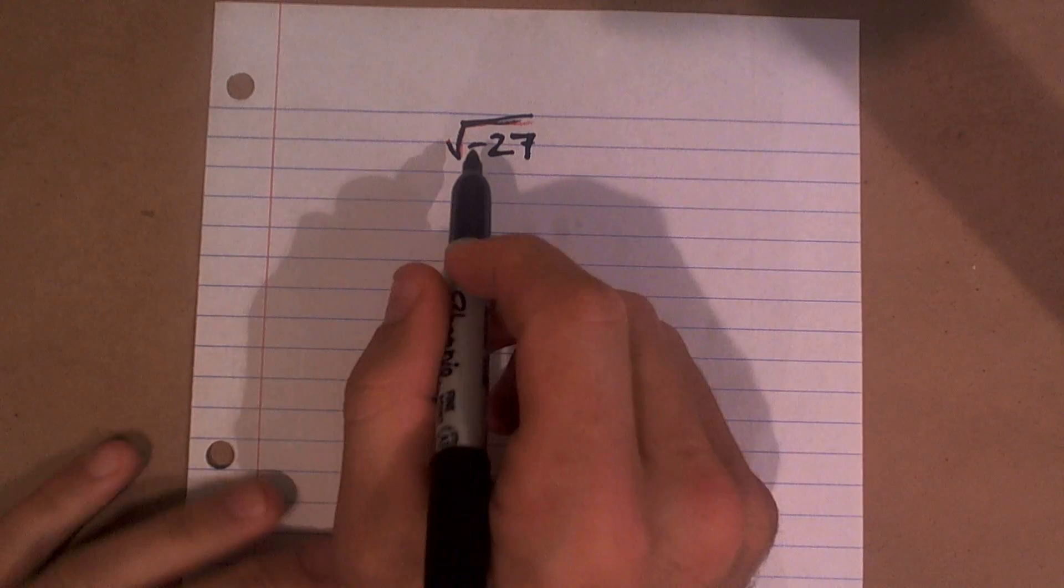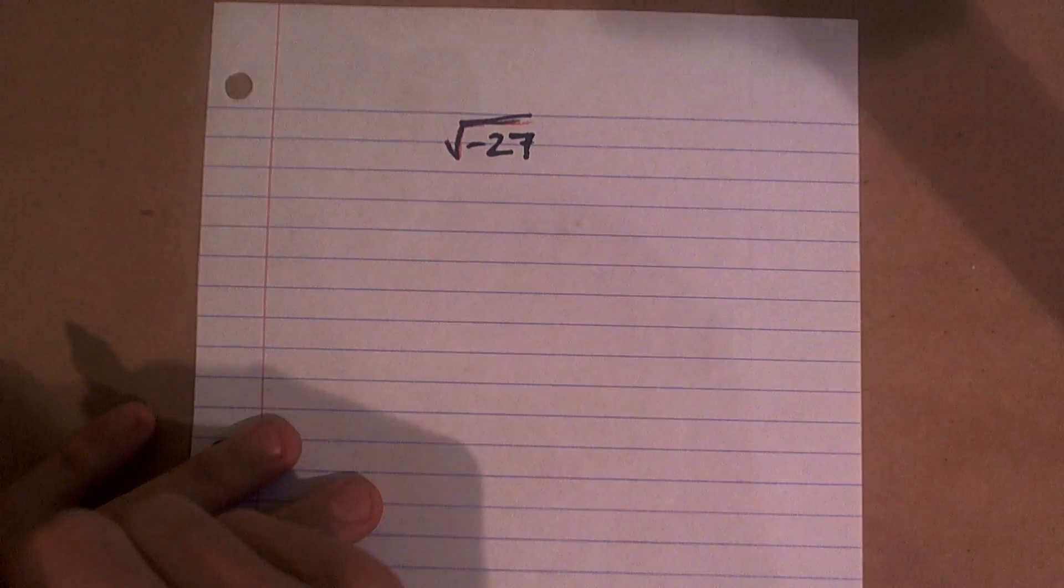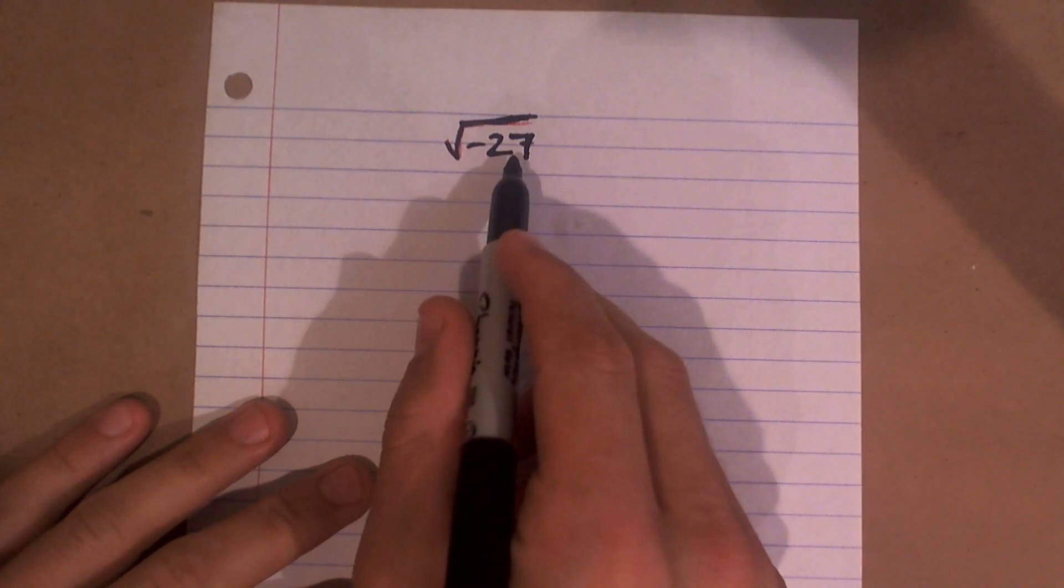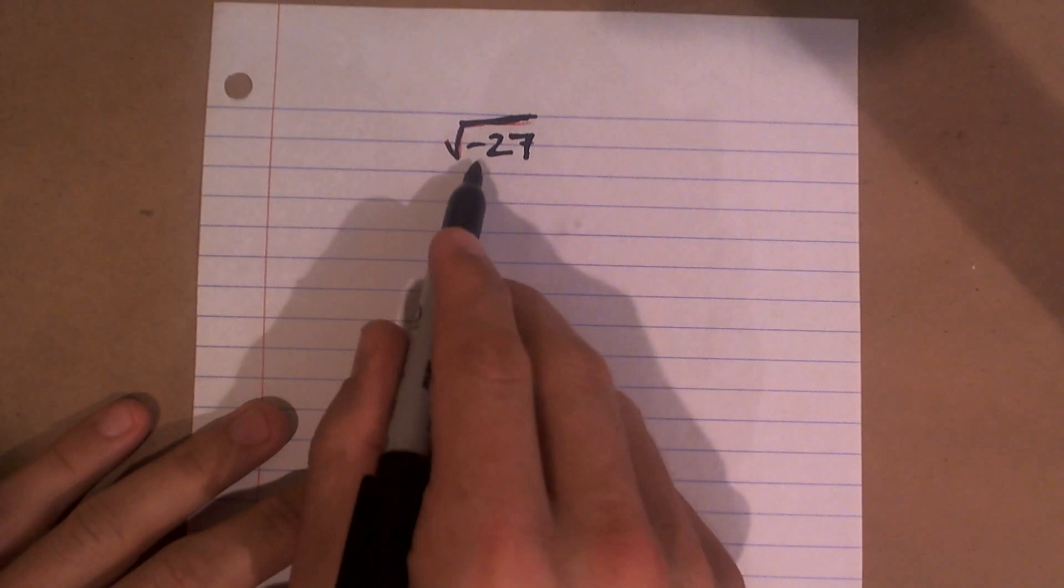So there's a couple things we need to know about dealing with the square root of negative 27. The first thing we want to do is try to simplify this.